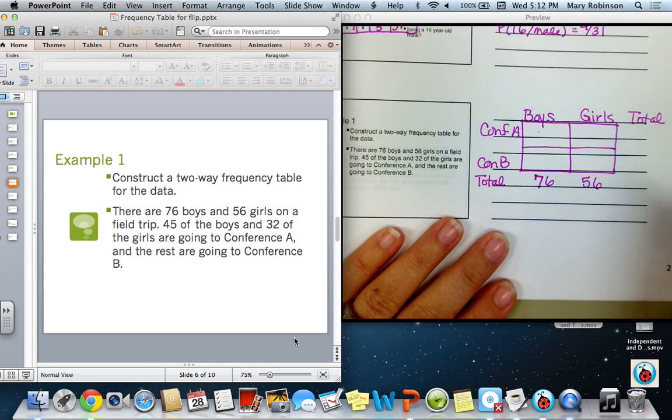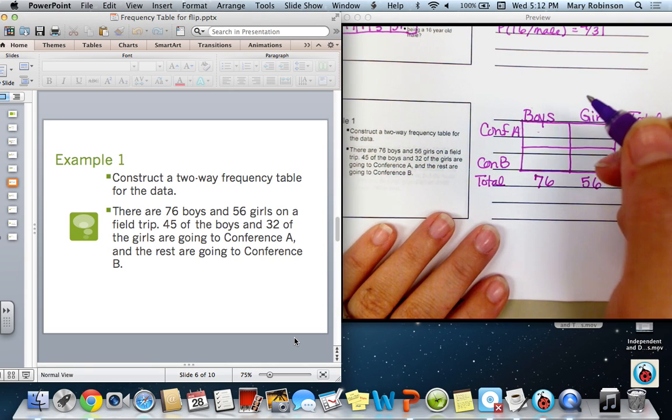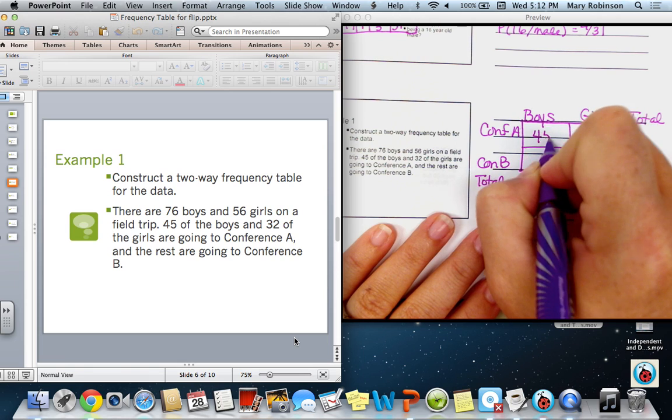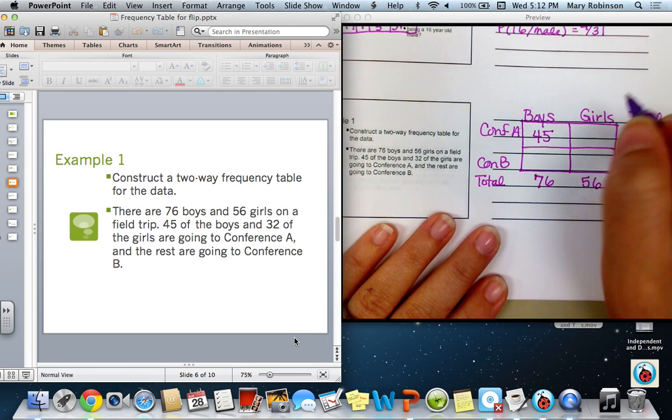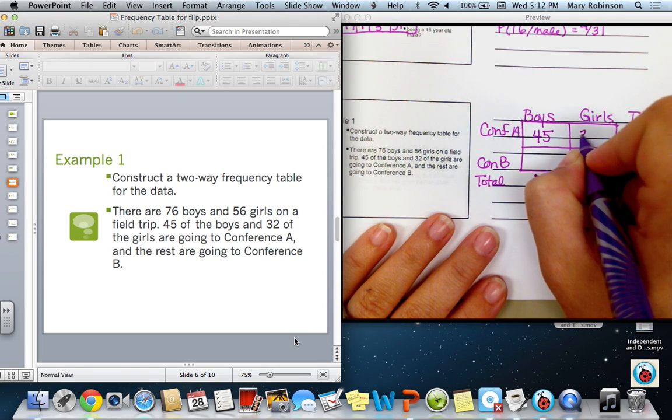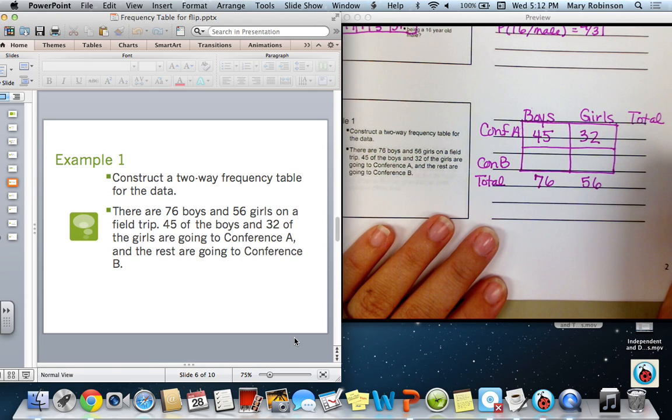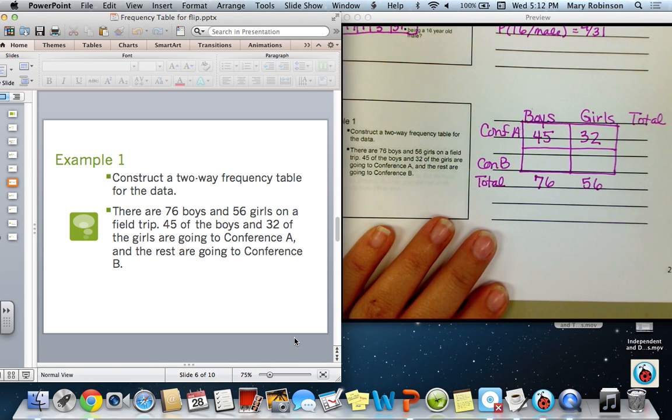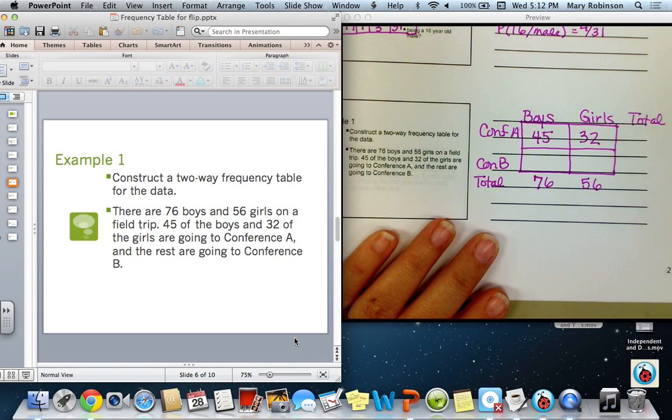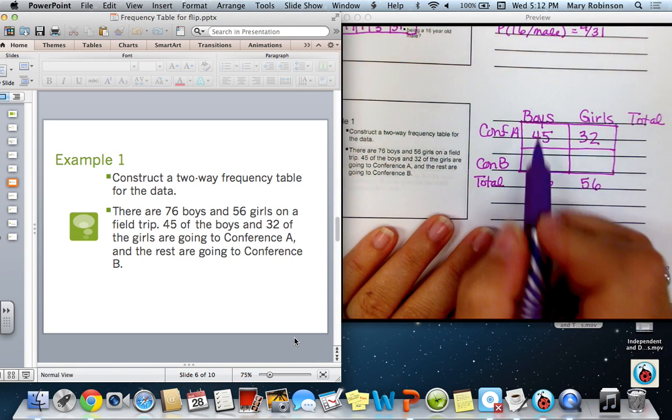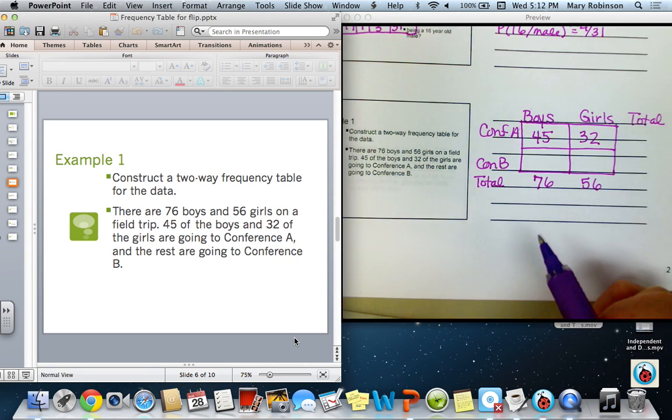Next it says that 45 of the boys and 32 of the girls are going to Conference A. So 45 boys going to Conference A and 32 girls going to Conference A. And then it just says the rest are going to Conference B. We're going to have to do some deductive reasoning here to determine how many boys and girls each went to Conference B.